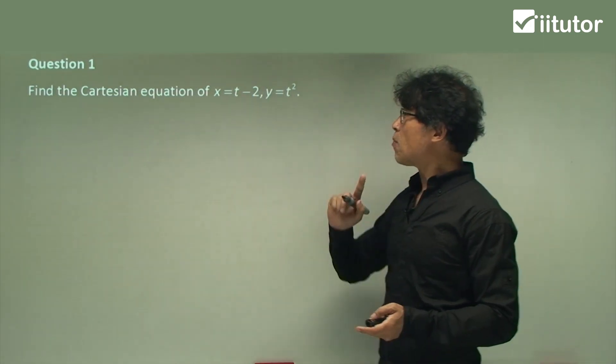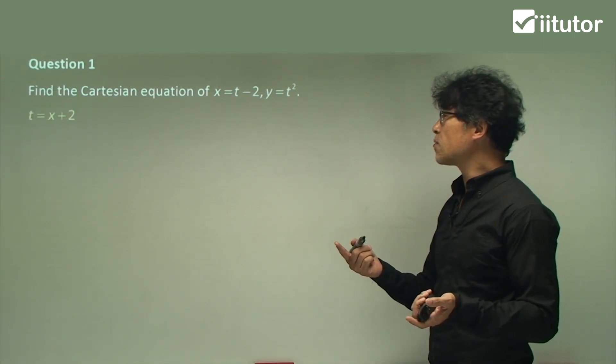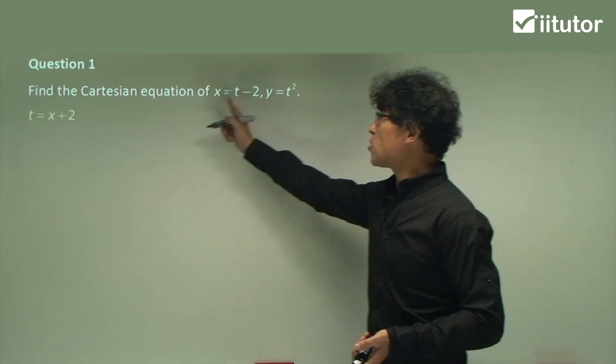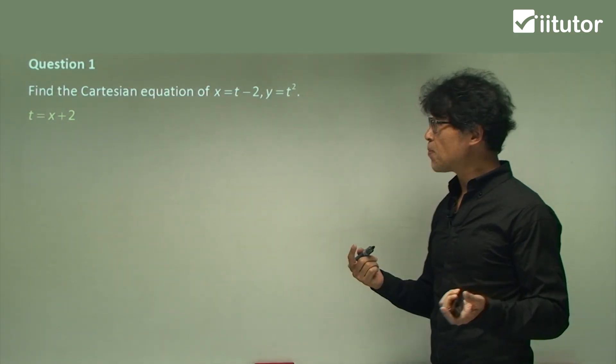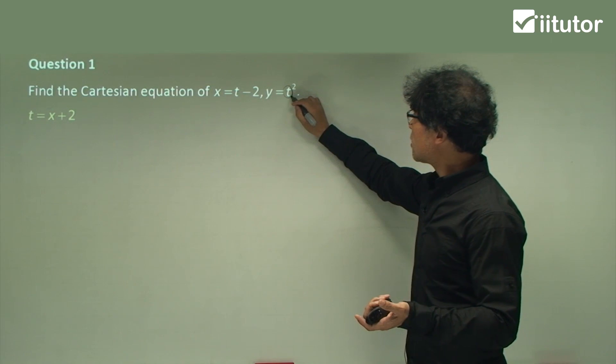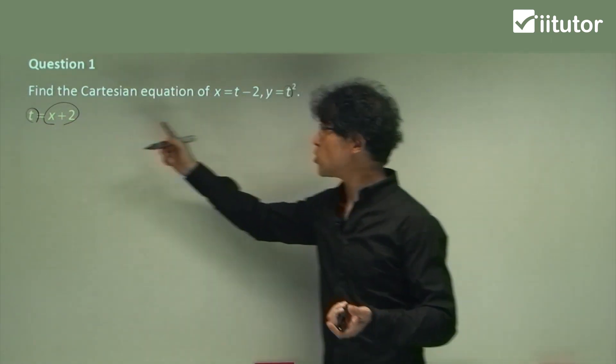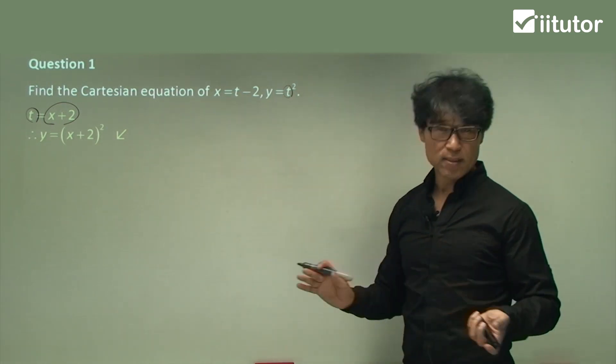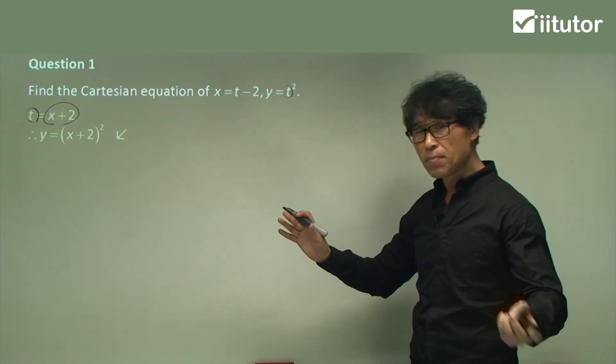So firstly, I'm going to make t the subject, and I'm going to make t written in terms of x, like this one. So t is x plus 2, which we just did some algebra to make t the subject. And then, that's t, and that is t. So we are going to substitute x plus 2 in here, and that's it. See here? t has disappeared. That's all you want. Does that make sense?